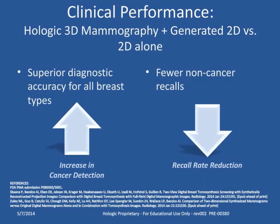Hologic's clinical study and prospective clinical trials show that Hologic 3D mammography plus a generated 2D image is superior to 2D alone. The results demonstrate that there is a significant benefit in using the generated 2D plus 3D imaging for routine screening mammography. Diagnostic accuracy was shown to increase, while non-cancer recall rate was shown to decrease, with generated 2D plus 3D compared to 2D imaging alone.